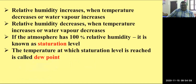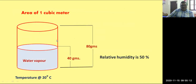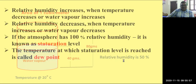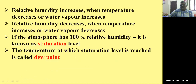Generally, relative humidity increases when temperatures decrease or water vapor increases. If water vapor increases to 60 grams in the same example, the relative humidity will become 75%. If the water vapor decreases to 20 grams, the relative humidity will become 25%. So if the content of water vapor increases, relative humidity increases; if water vapor decreases, relative humidity also decreases. That is the relation between relative humidity and water vapor.